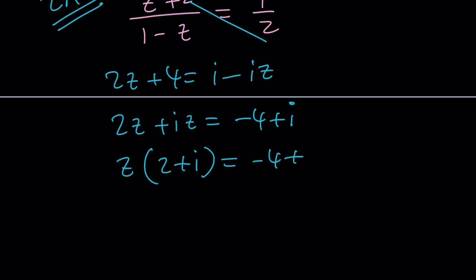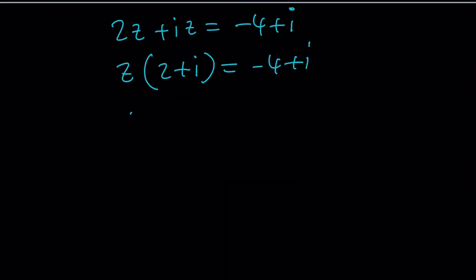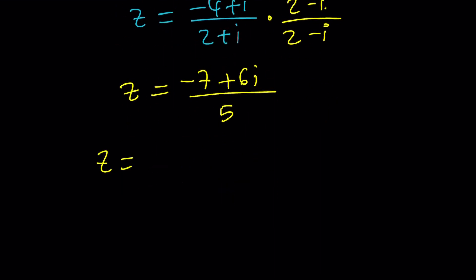At this point, you can also replace Z with A plus BI, but there's no need. We're just going to divide by using the conjugates again, but this time it's going to be much easier, because we know the numbers. And if you distribute this, you're going to get negative 8 plus 1. This is going to give you negative 7, and then 4I plus 2I is going to give you 6I, and at the bottom, you're going to get 5. And this is going to give you a single solution.